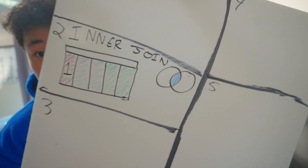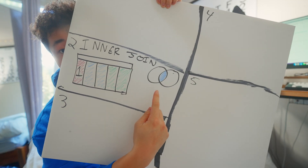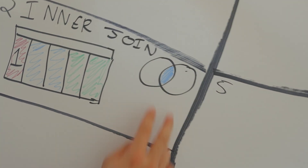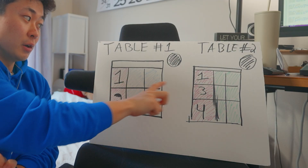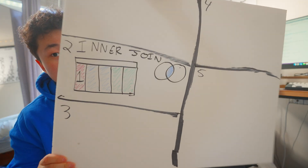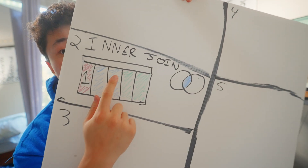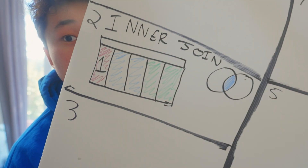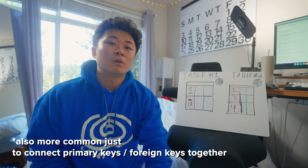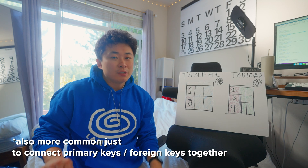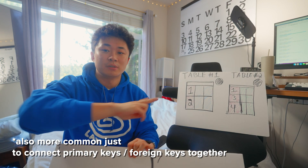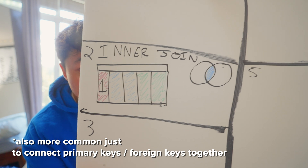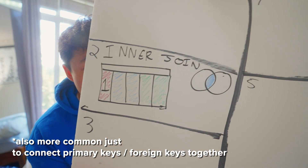The inner join is when we're finding everything in common with both tables. With both table one and two, as you can see right here, the common value is one, so our output is going to be just one. The inner join is the most common one because oftentimes you only care about what values are actually common between the two tables. Here is a live example of that now.